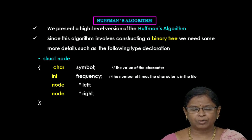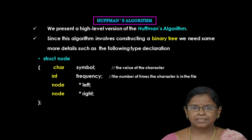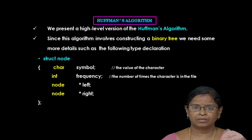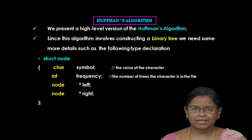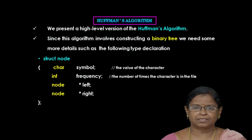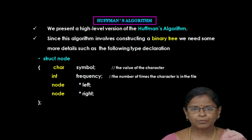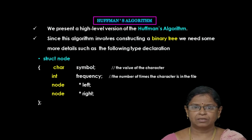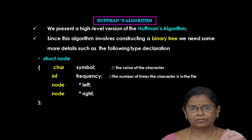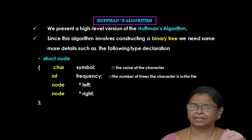Before discussing the high level algorithm, we are learning about the data structures used in this algorithm. Since we are constructing a binary tree represented in the form of a linked list, each node consists of four fields: symbol, frequency, left link, and right link.